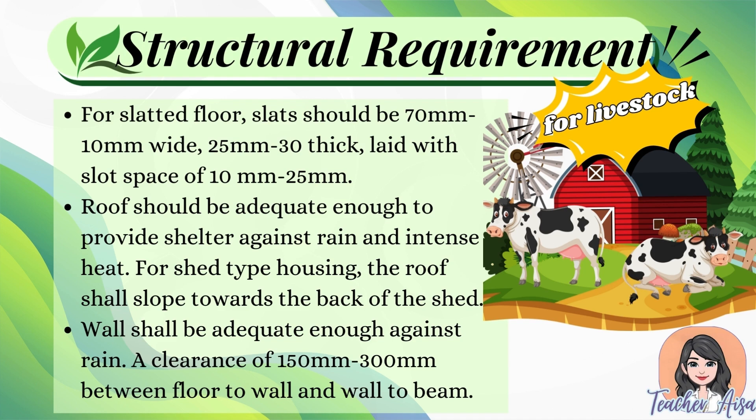The roof should be adequate enough to provide shelter against rain and intense heat. For shed type housing, the roof shall slope towards the back of the shed. The wall shall be adequate enough against rain, with a clearance of 150 millimeters to 300 millimeters between floor to wall and wall to beam.